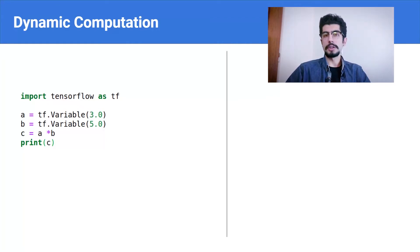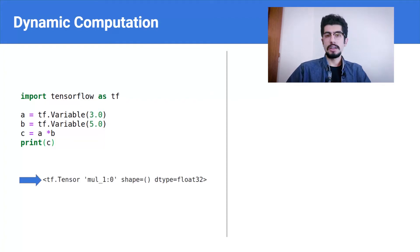I simply define A and B to be two variable tensors, then multiply them and store the result in C. By running the code you see something called a symbolic node, which means the operation hasn't actually been performed yet — TensorFlow has to do it when it compiles the whole graph.